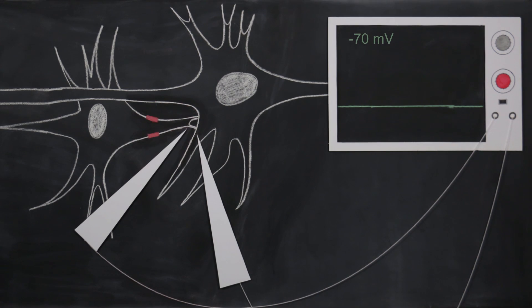One final thing to note is that the transmission of EPSPs and IPSPs is decremental. The size of EPSPs and IPSPs decrease in amplitude as they travel across the neuron.